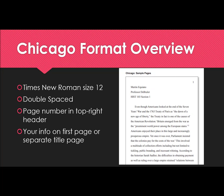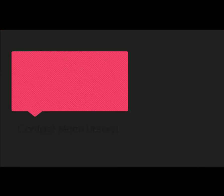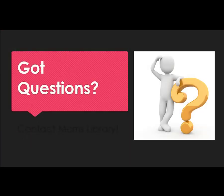That's the easy part — where Chicago really differs from the other styles used at KCC is in the footnotes section, which we will be covering in the next video in this series. In the meantime, please check out the Chicago Research Guide for more helpful information, and contact your Morris librarians with any questions you may have.